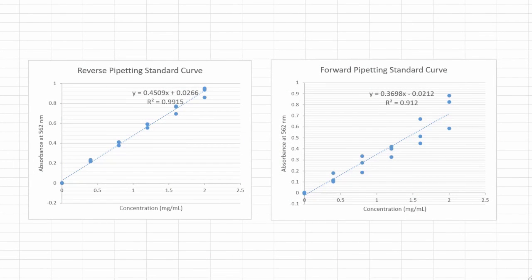Looking at the results obtained from reading the 96 well plates, we can see that reverse pipetting allowed for more accurate absorbance readings as demonstrated by the greater resulting R-square value when compared to the forward pipetting standard curve.